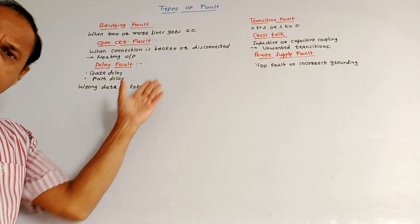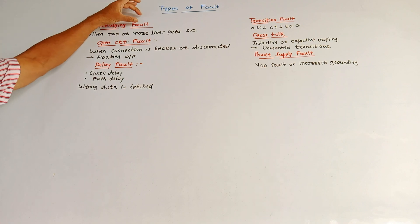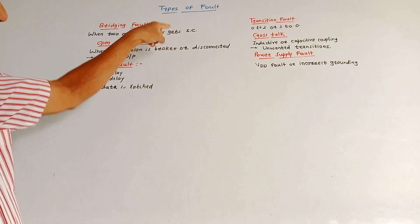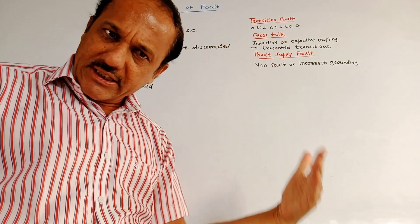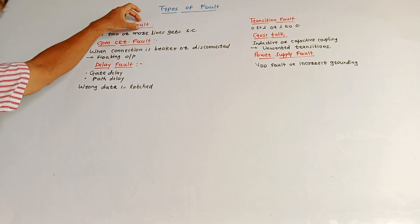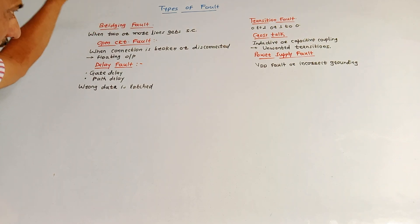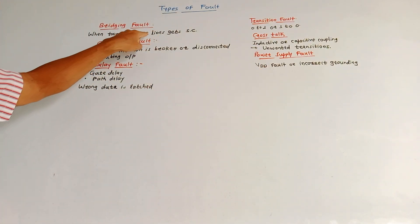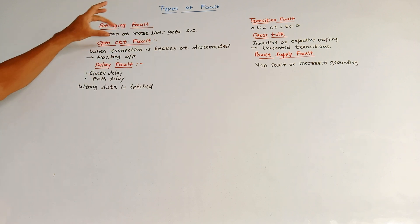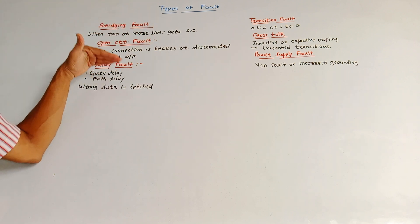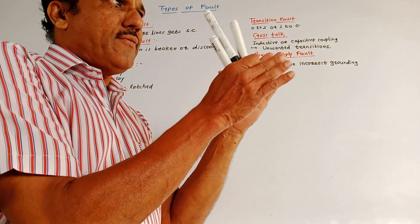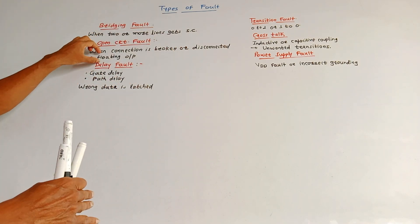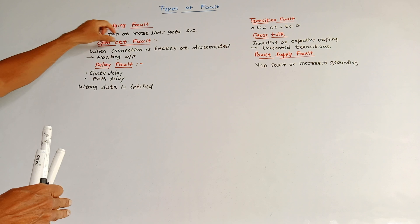Next is the bridging fault. When two or more lines or conducting paths get short-circuited, it produces errors at the output — this is referred to as bridging fault. Next is open circuit fault. As the name indicates, if there is a broken connection or a conducting path is disconnected, it creates a floating output. This is referred to as open circuit fault.